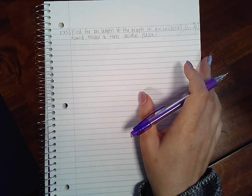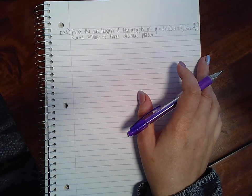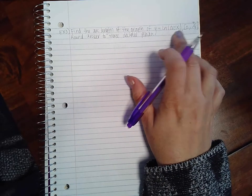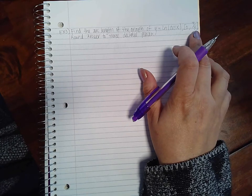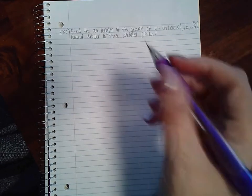This example says find the arc length of a graph of ln(cos(x)) on the interval 0 to π/4 and round your answer to three decimal places.